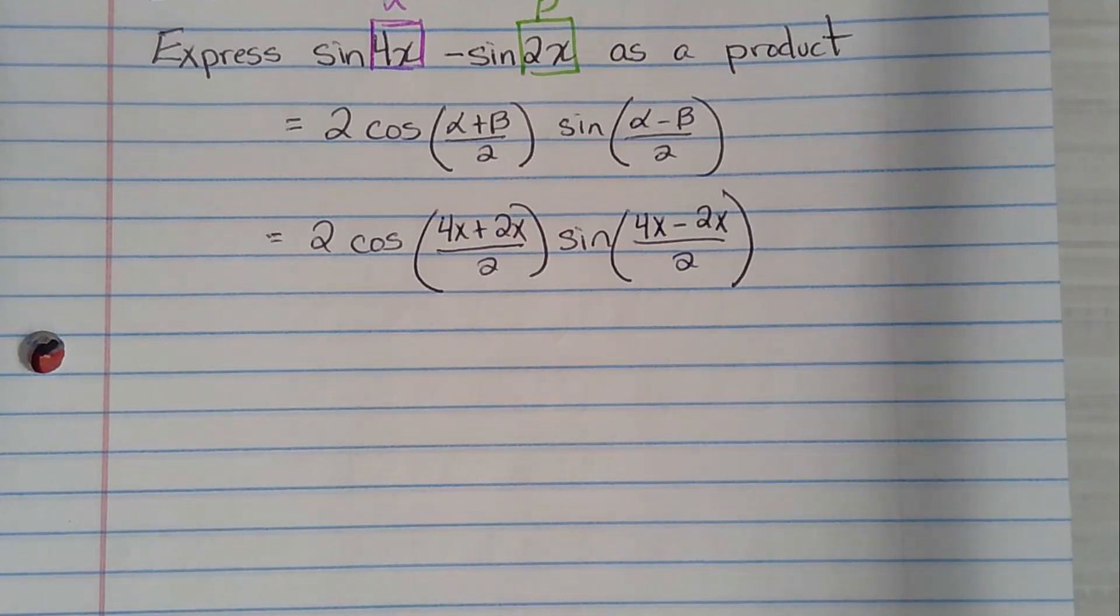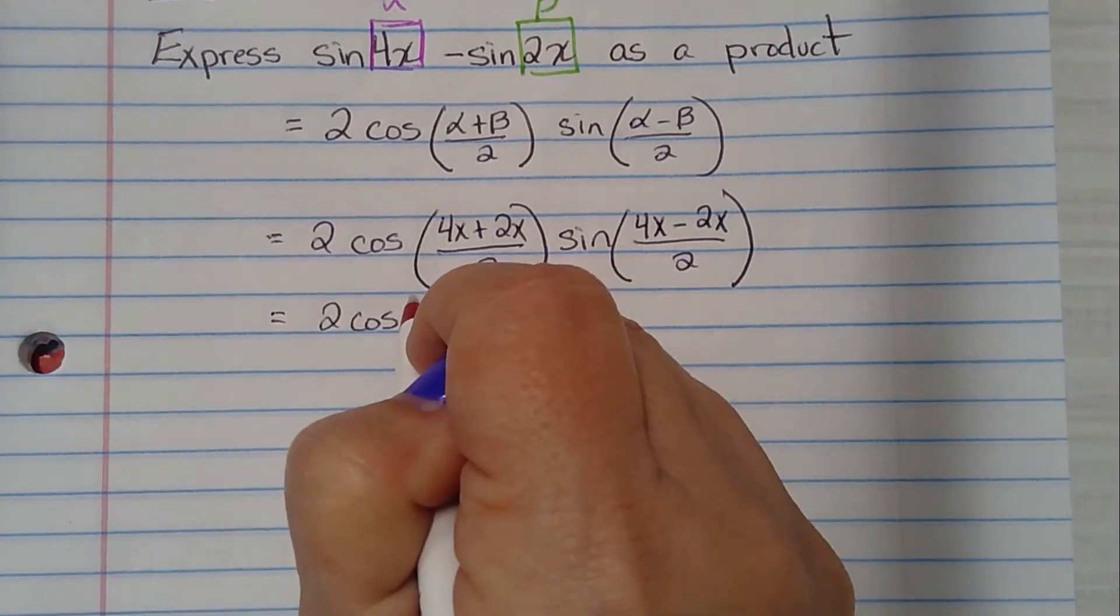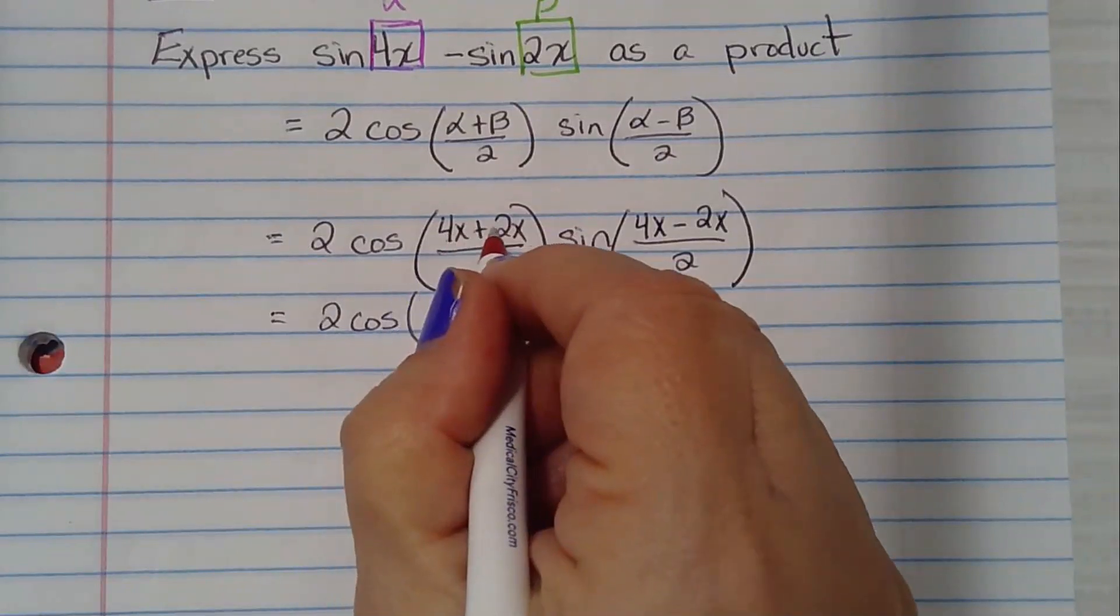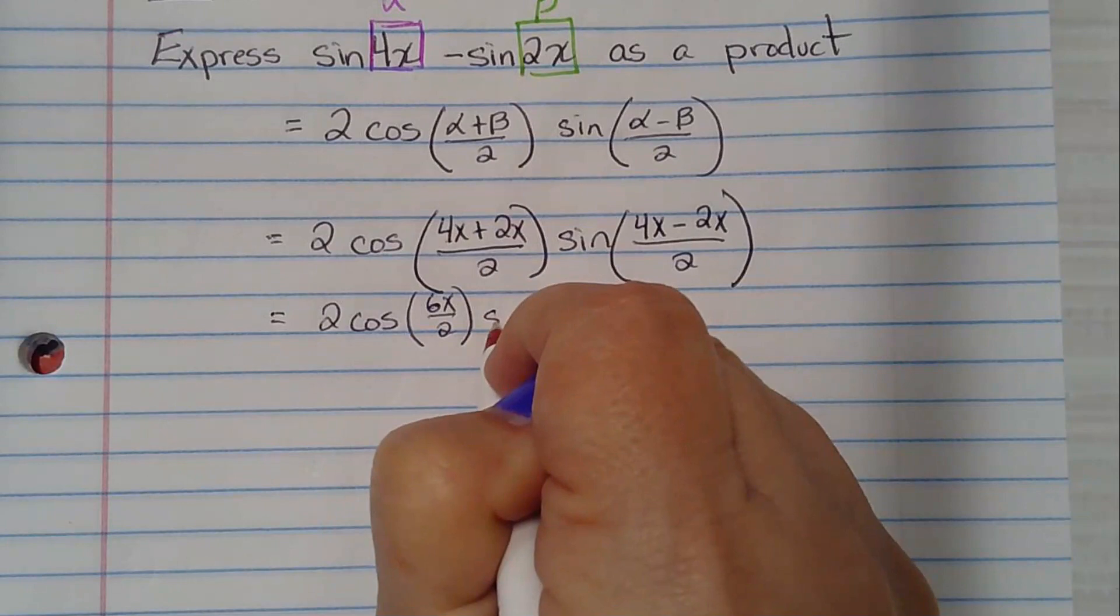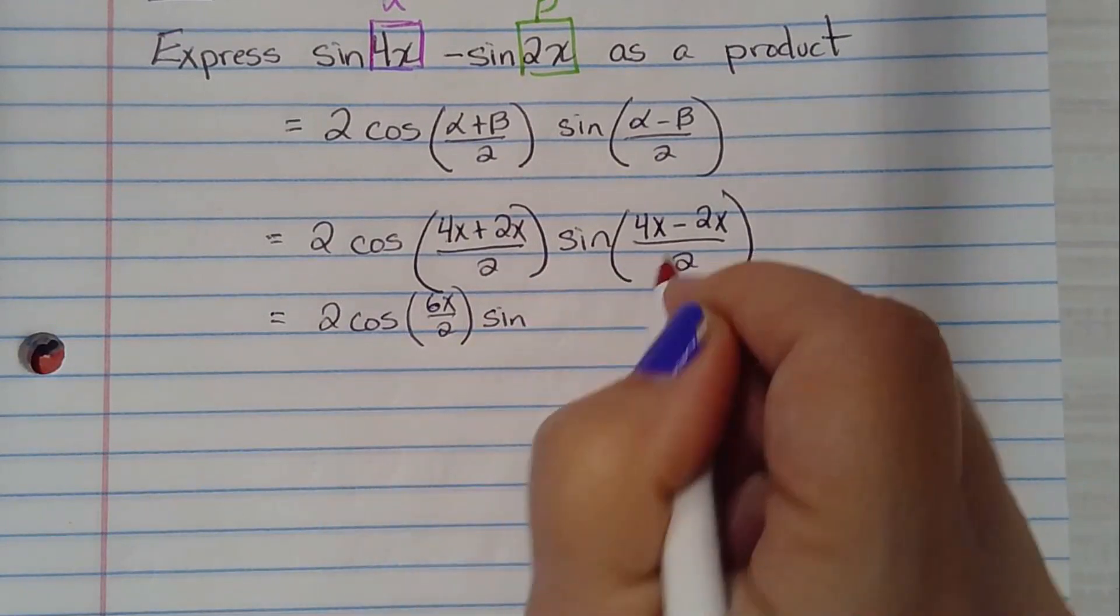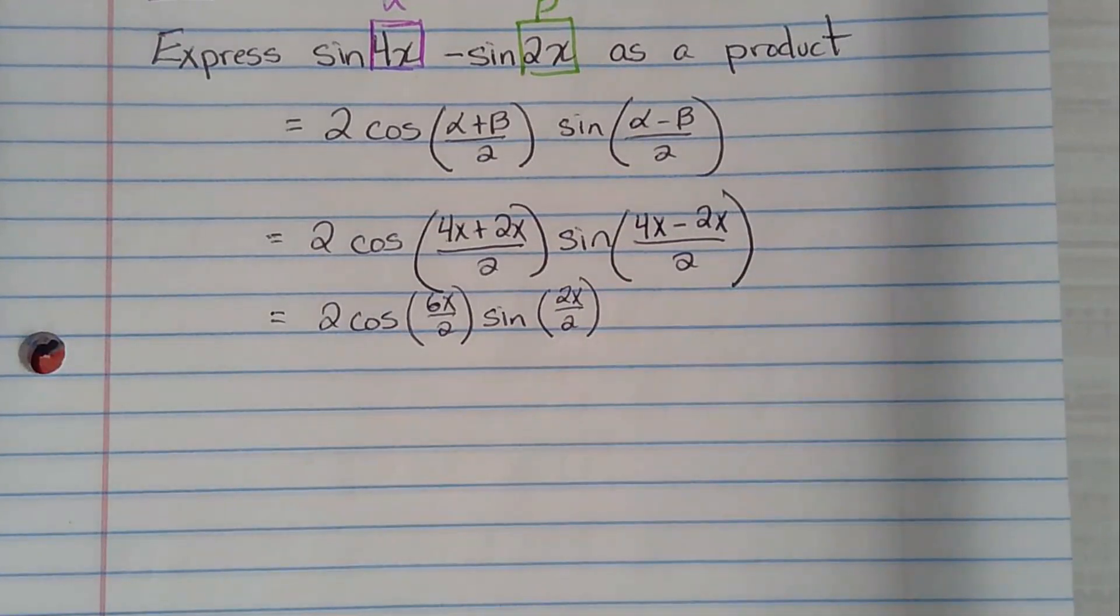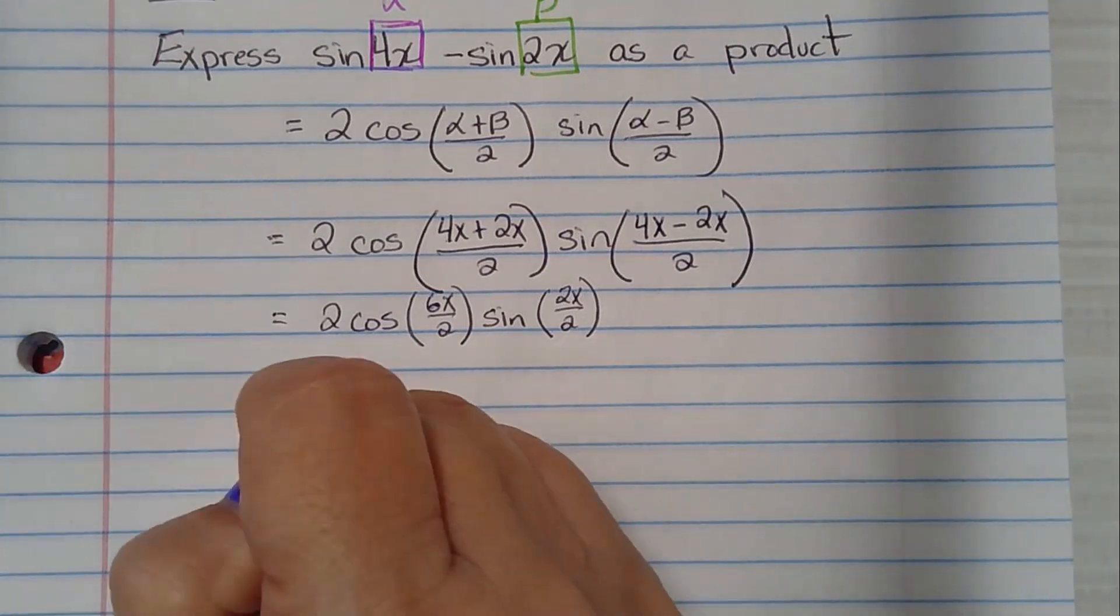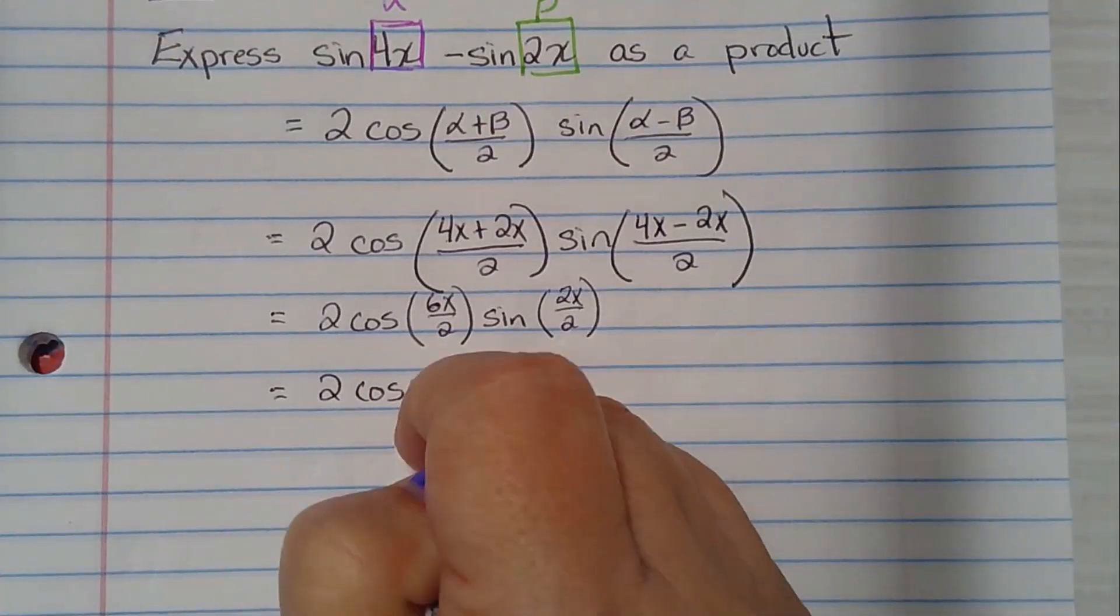So I'm going to work out every step. We're going to have 2 cosine. I'm going to work inside my parentheses. 4x plus 2x is 6x over 2. 4x minus 2x is 2x over 2. All I did was add my numerators. Now I do the division. 6x divided by 2 is 3x.